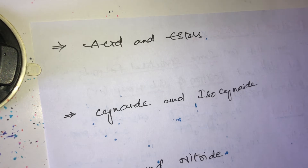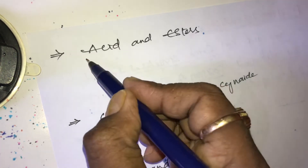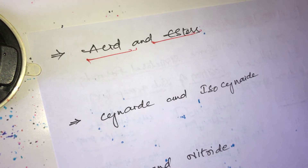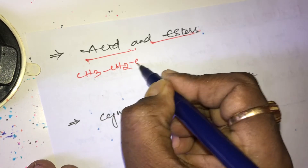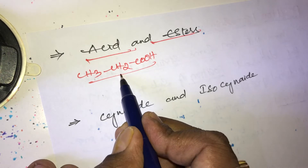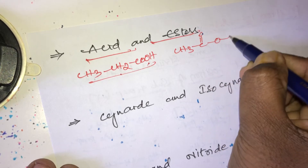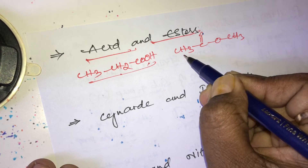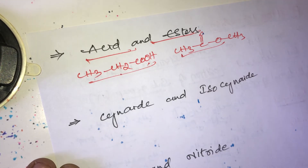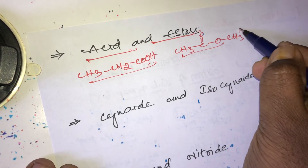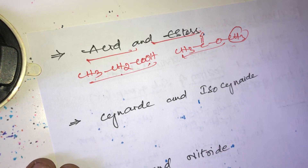Another example is acids and esters. Acids and esters also belong to functional isomers. For example, CH3CH2COOH is propanoic acid. We can also write the ester CH3COOCH3, which is methyl ethanoate.